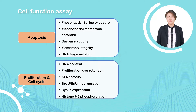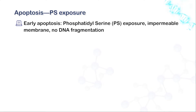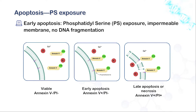Here we have some examples. The externalization of phosphatidylserine is one of the features of early apoptosis. In normal viable cells, phosphatidylserine is located on the inner side of the cell membrane. In early apoptosis, the phosphatidylserine flips from the inner side to the outside surface. The exposed phosphatidylserine can bind to Annexin-5 with high affinity.